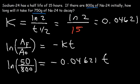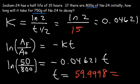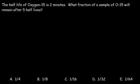Take that number, negative 2.772589, divided by negative 0.04621, and you should get the time. I got 59.9998, which is approximately 60. So it takes 60 hours for 750 grams to decay.